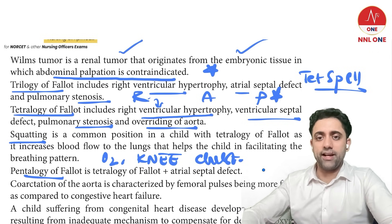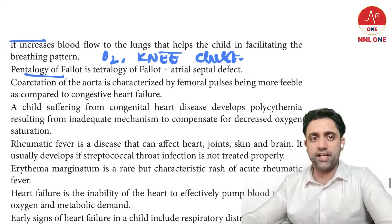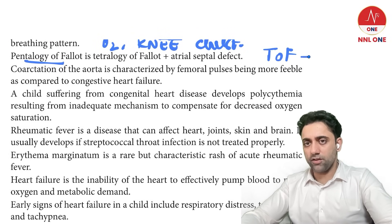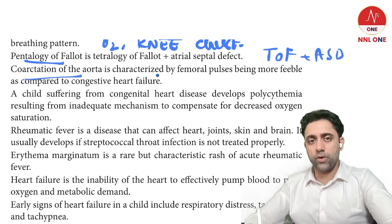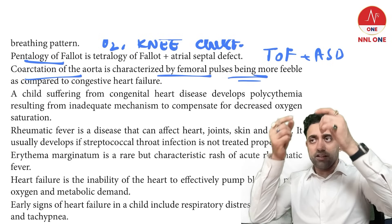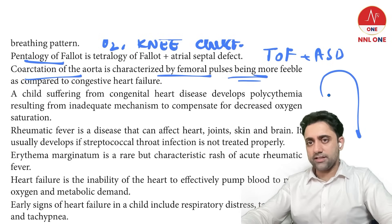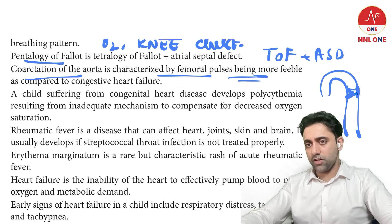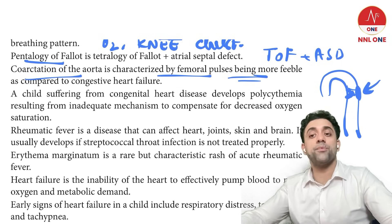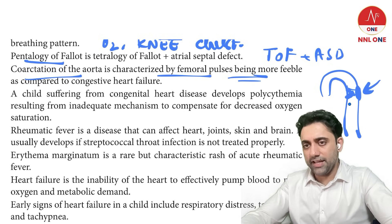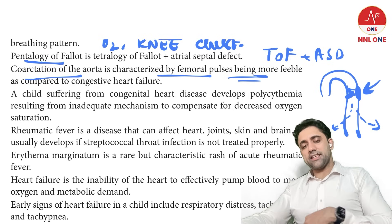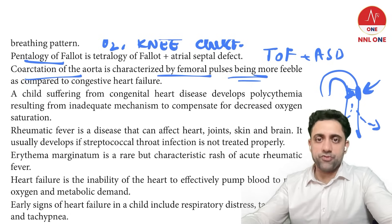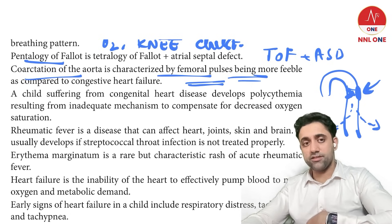Pentalogy of Fallot includes all four components of tetralogy of Fallot plus an atrial septal defect. In coarctation of the aorta, there is aortic obstruction reducing blood flow to the lower limbs. The patient will have abnormal femoral pulses and bounding upper limb pulses.